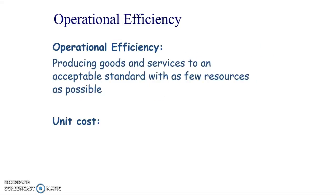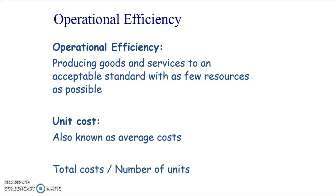Key terms: operational efficiency is producing your goods and services to an acceptable standard — not just making them shoddy, they've got to be good quality — but with as few resources as possible. It's really about getting that unit cost as low as possible. Unit cost is also known as average cost; same thing — unit cost in business, average cost in economics. Unit cost is the cost of producing one unit, worked out by taking total costs divided by number of units.